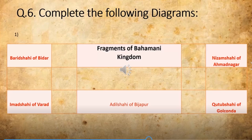Two options are going to be wrong and one option is going to be correct. For example: Adilshahi of Bijapur, Virachai of Berar, or Imadshahi of Ahmednagar. You are going to click on the right option. The names will be mismatched with the kingdoms and one will be correct. You are going to click on that and get the correct answer.